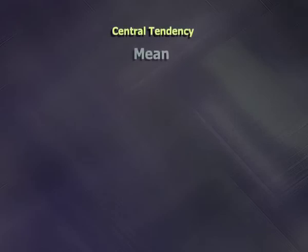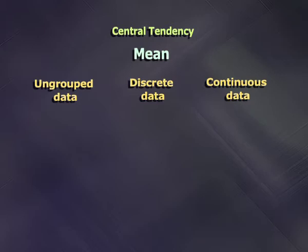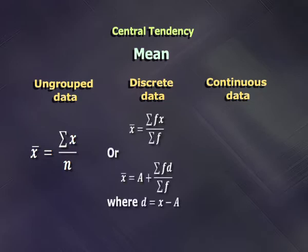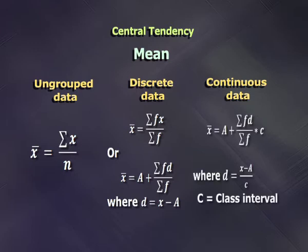We shall now look at the formulas of mean for different types of data. For mean of ungrouped data, x-bar equals sigma x upon n, that is total of all observations divided by the number of observations. For discrete data, x-bar equals sigma fx upon sigma f, or as a shortcut formula, x-bar equals A plus sigma fd upon sigma f, where d is a deviation from assumed mean, that is d equals x minus A. For continuous data, x-bar equals A plus sigma fd upon sigma f into c, where d equals x minus A upon c, and c is a class interval.